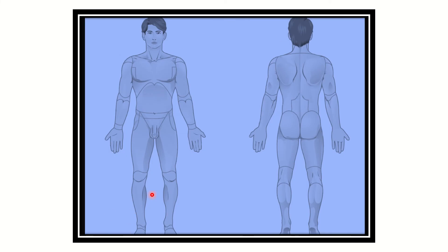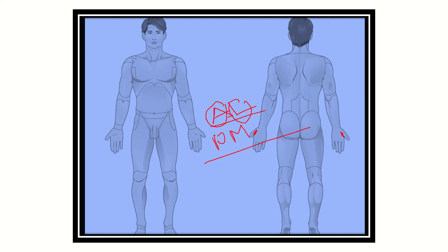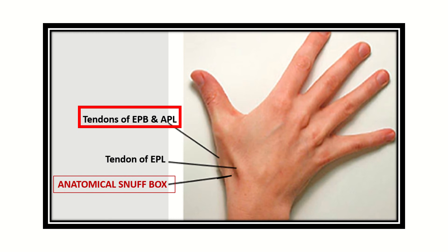Here we can see the normal anatomical points of a person. The anatomical snuffbox is visible, and it is divided into two borders: anterolateral and posteromedial. The anterolateral boundary is formed by two tendons — one is extensor pollicis brevis and the other is abductor pollicis longus.